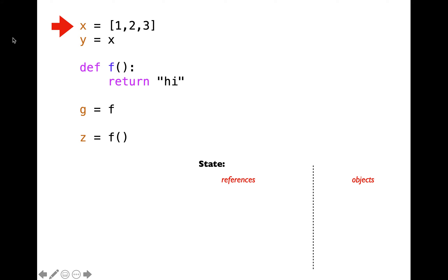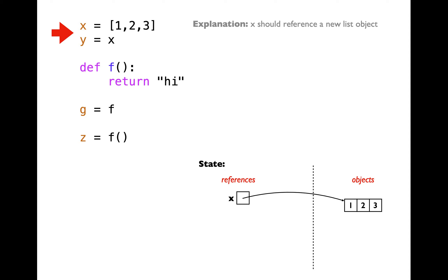Let's go through this example. Line number one is creating a new list object which contains three items: one, two, and three. The list object will get created in the heap memory because objects go into the heap memory, which is on the right-hand side. Then we add a reference to the list object into the variable called x. Variables and frames reside in stack memory, which comes on the left. So x should reference a new list object.